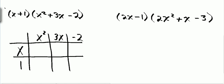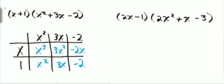x times x equals x cubed. 3x times x is 3x squared. Negative 2 times x is negative 2x. x squared times 1 is x squared. 3x times 1 is 3x. And negative 2 times 1 is negative 2.